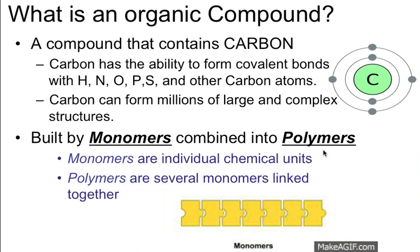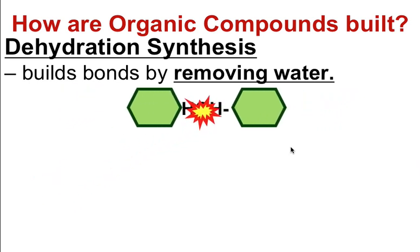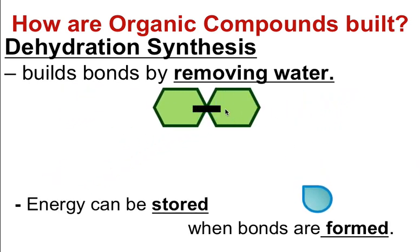When you put monomers together, you get something called a polymer. Monomers are the individual pieces and polymers are several monomers linked together. Organic compounds are built using a process called dehydration synthesis. Dehydration means losing water. This is when we build bonds between monomers by removing water — a monomer with an H+ ion bonds with a monomer with an OH- on the opposite end. When you add energy and remove that H+ and OH-, which creates water, you form a bond and can store energy within it.